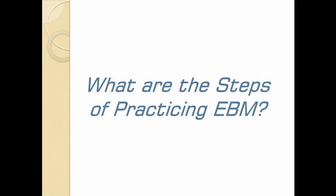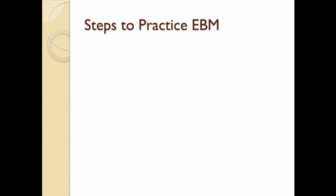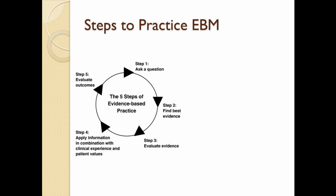What are the steps to practicing evidence-based medicine? This figure shows the five steps of evidence-based practice. When we encounter a clinical uncertainty, the first step is to ask an answerable clinical question. Step two is to acquire the best available evidence to answer that question. Step three is to appraise that evidence for its scientific rigor.